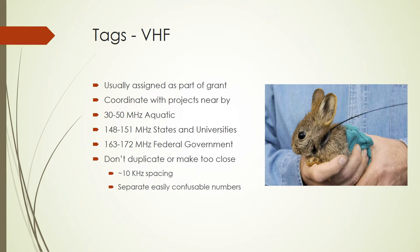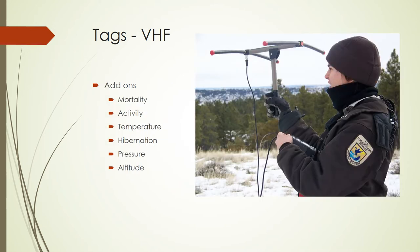I also keep easily confusable numbers separated — I would never put frequency 131 in the same area as 113. Since numbers are easy to mix up when you write them down, if a technician records the wrong frequency, the known population separation makes the error obvious because a rabbit won't move between those two populations.